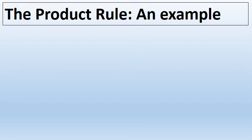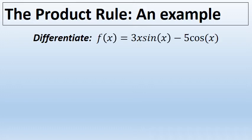In this example we're going to take the derivative of a function and use the product rule. If f of x is equal to 3x times the sine of x minus 5 cosine of x, finding the derivative will require the use of the product rule and the sum and difference rule.